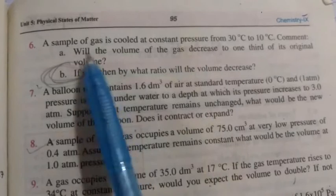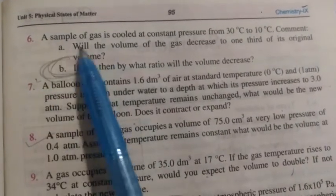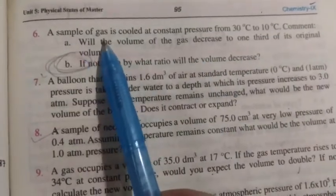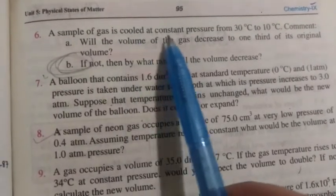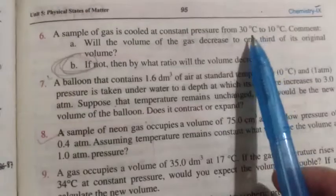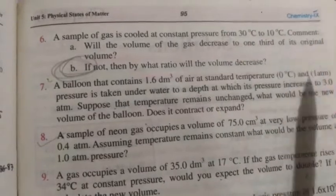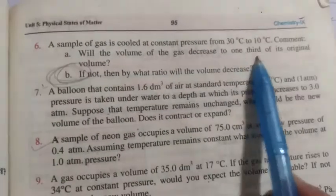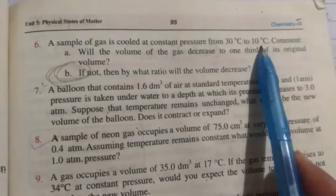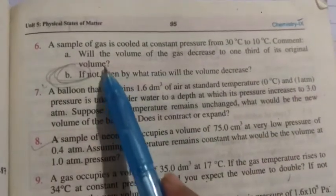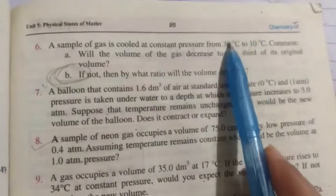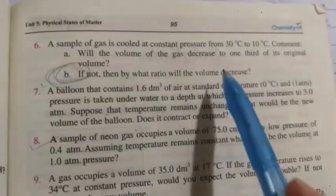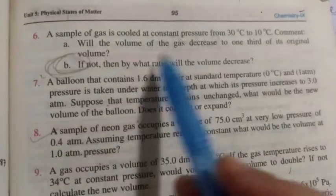Now come to page number 95, numerical number 6. Statement: A sample of gas is cooled at constant pressure from 30 to 10 degree centigrade. The gas sample is cooled down, temperature reduced from 30 to 10, and during this time the pressure is kept constant. Part A: Will the volume of gas decrease to one third of its original volume? When temperature decreases, will volume decrease by one third of its original volume? We need to find if volume decreases by one third or not.